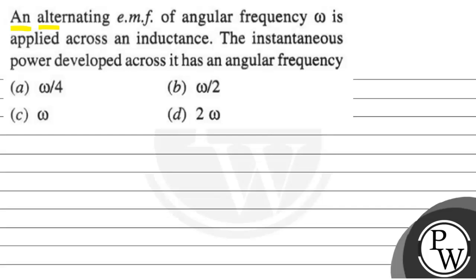Let's read this question. The question says that an alternating EMF of angular frequency omega is applied across an inductance. The instantaneous power developed across it has an angular frequency: omega by 4, omega by 2, omega, or 2 omega. We have to choose the correct option.